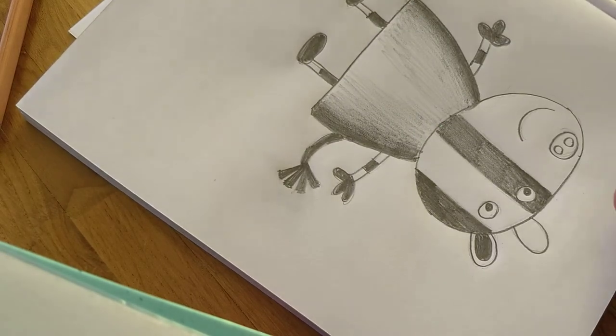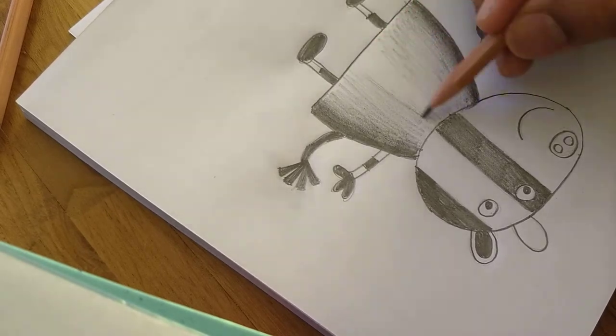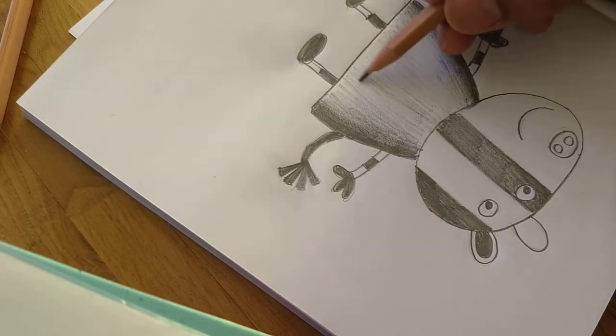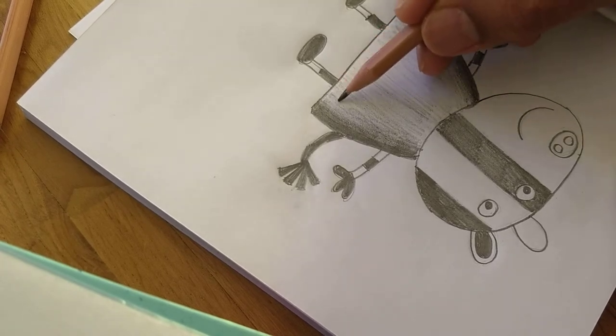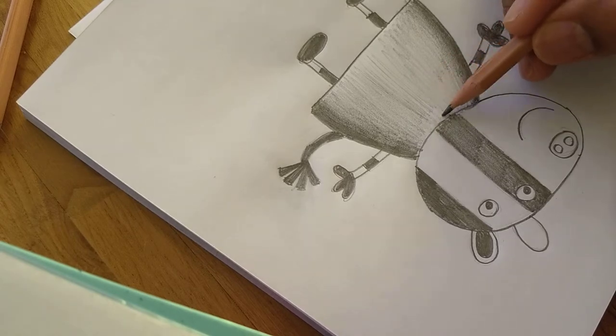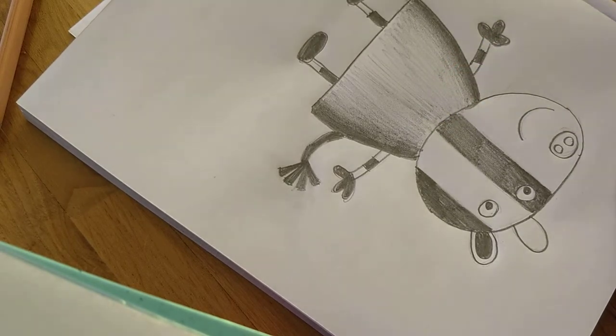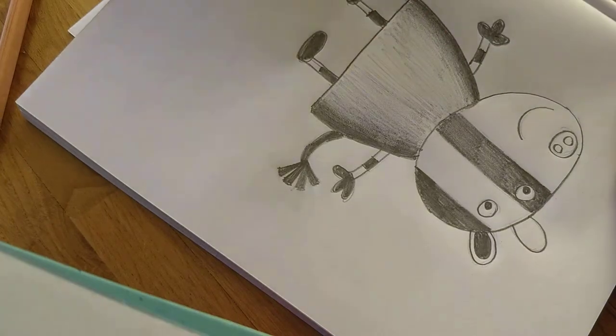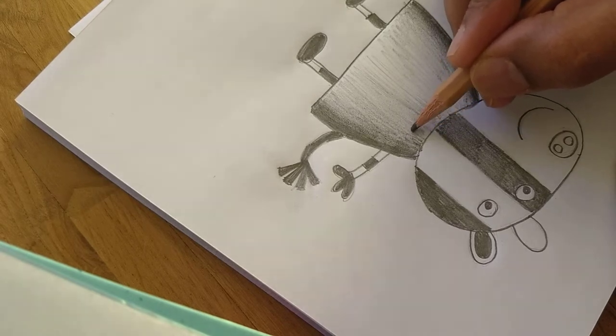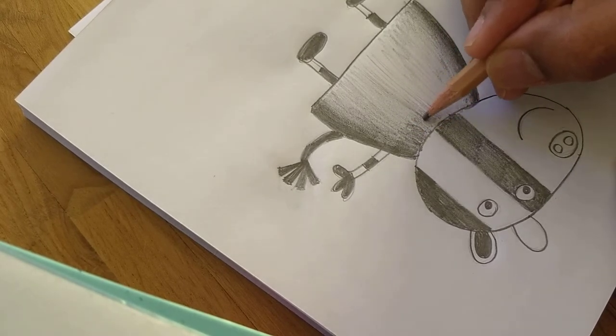Then you can use HB pencil just to make sure that it's the complete shading. Wherever there's open spaces or white spaces, you can just fill it up. You can make some corrections. You can keep this as a darker shade towards the end.